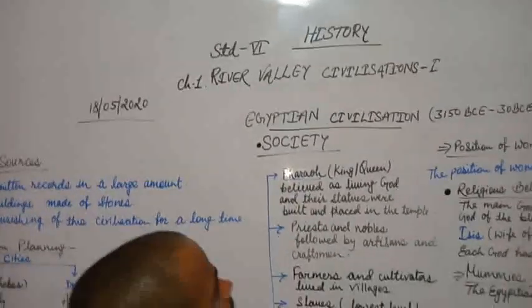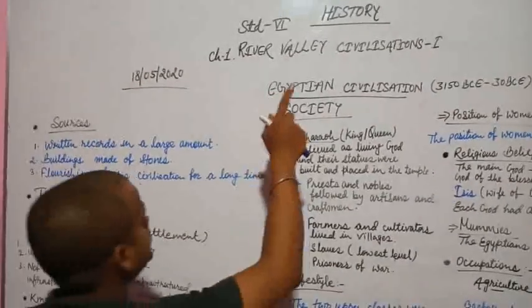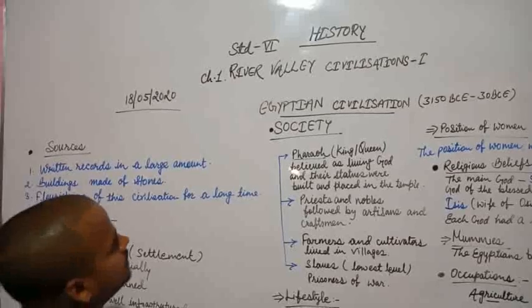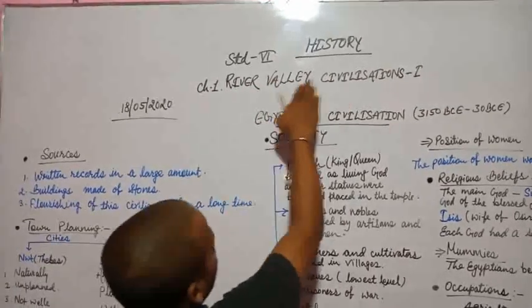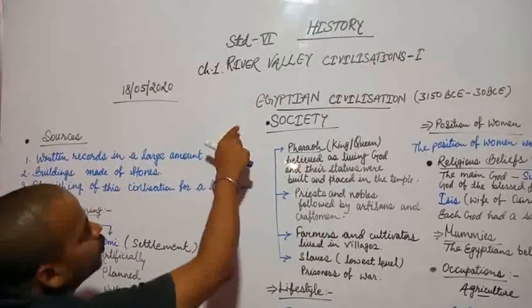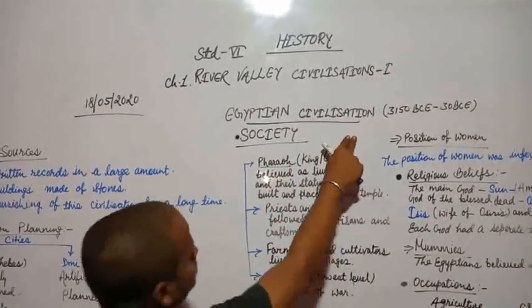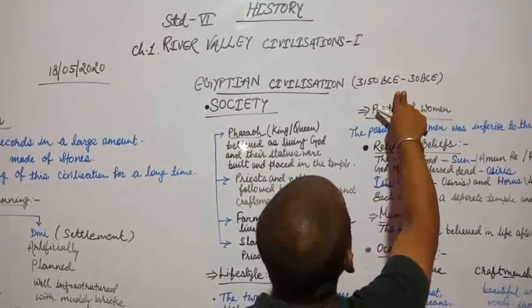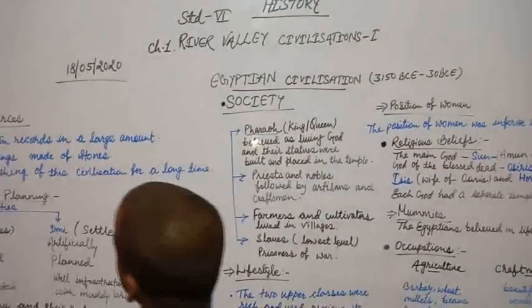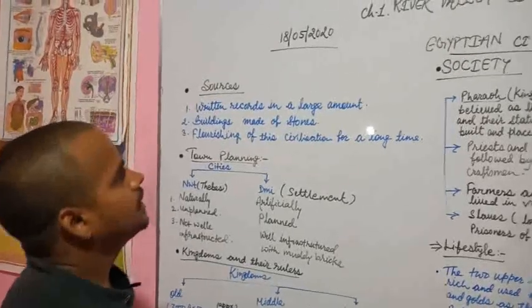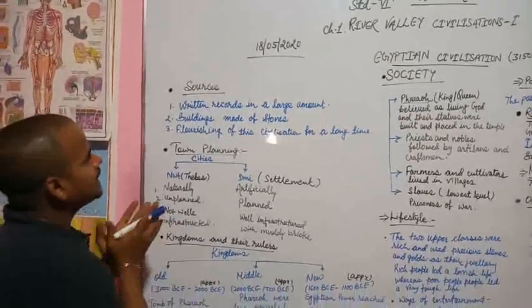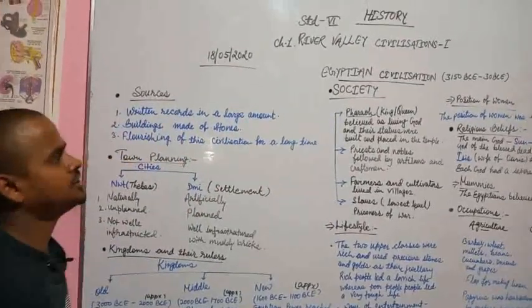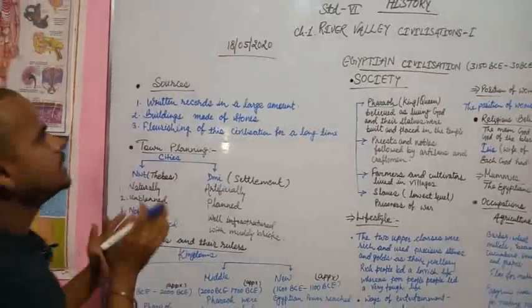Good morning everyone. This is online class for History Standard 6. As we have already studied about Mesopotamian civilization in this chapter, River Valley Civilizations 1, now we will study about Egyptian civilization that flourished during the age of 3150 BCE till 30 BCE.